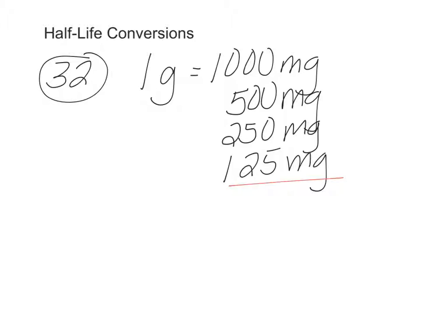So how we count it is how many half-lives. We do not go 1, 2, 3, 4. That's wrong. We want to count the transitions. So this is one half-life. And then from 500 to 250 is another half-life. And then it's going to half again. So basically halved three times.